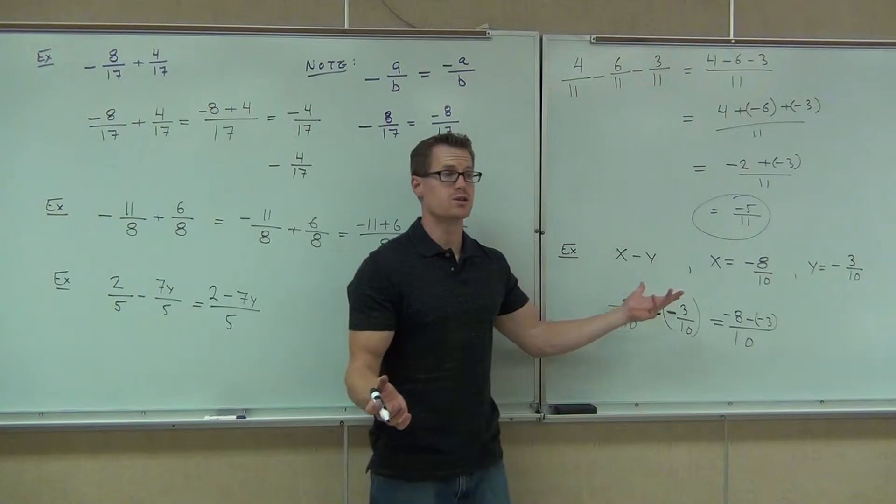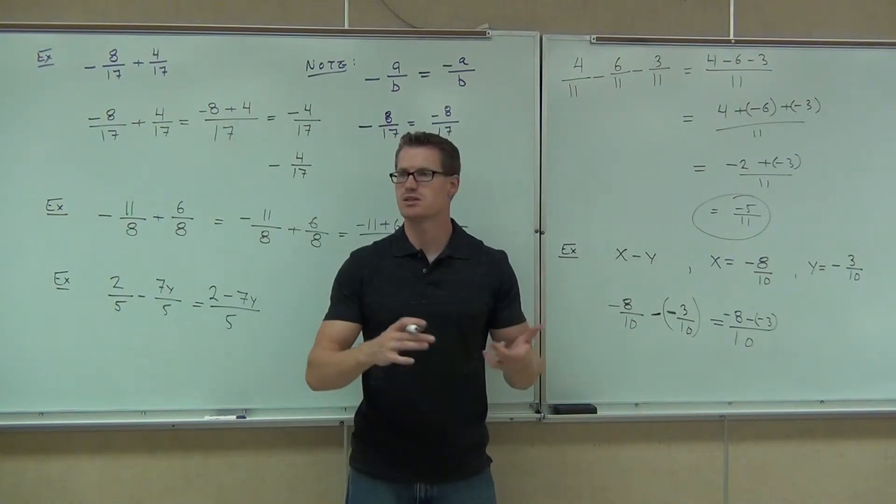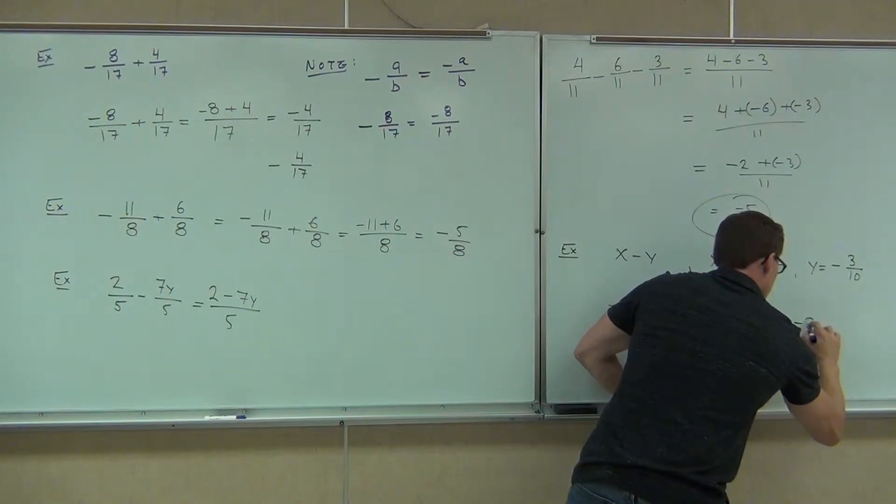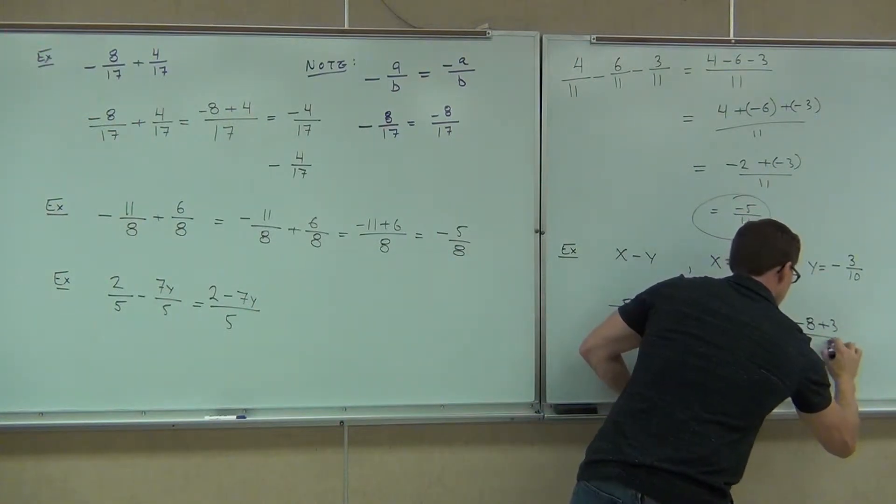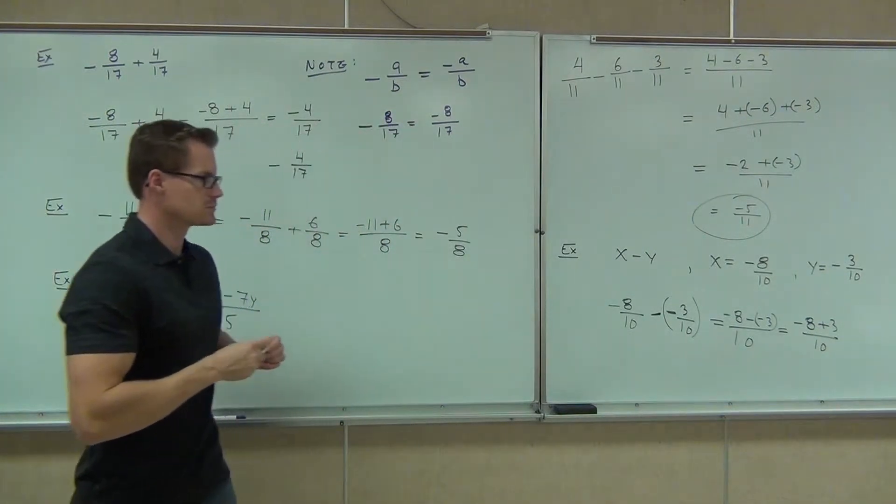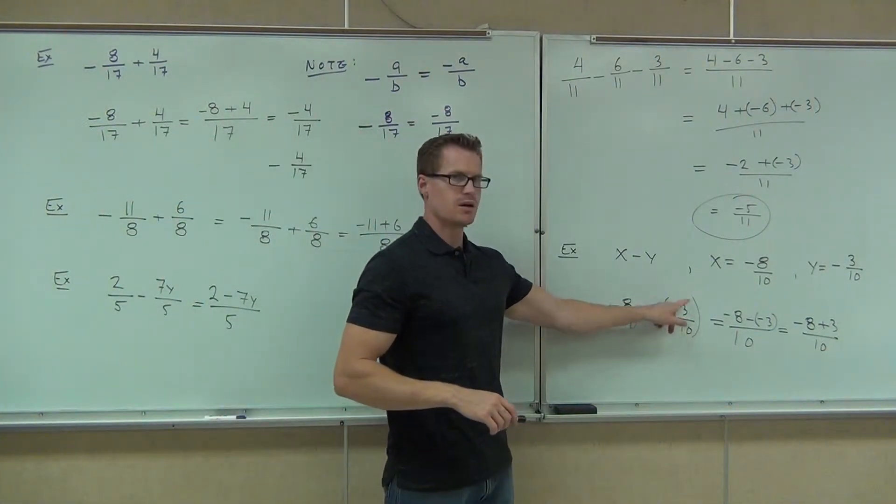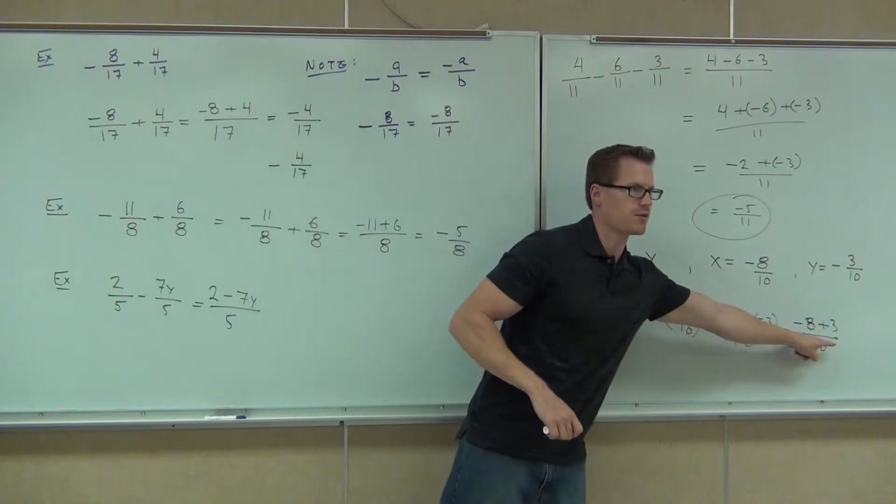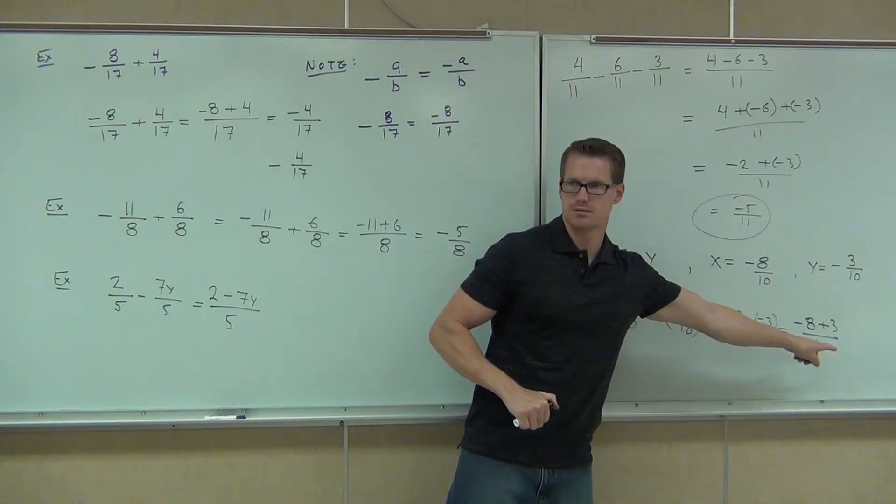You do it either way. I don't care where you do it as long as you realize that a minus and negative does give you that plus. I'll leave it this way since I already wrote it. We'll do negative 8 plus 3 over 10. If you change this to a plus first, you'd still get the same exact thing.